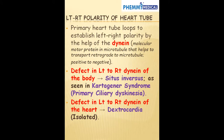Left to right polarity of the atrium. The primary heart tube loops to establish left-right polarity by the help of dynein. Dynein is a molecular multi-protein in the microtubule that helps to transport retrograde to the microtubule from positive to negative. If there's any defect in this dynein — for example, if you have defects in the left to right dynein of the whole body —